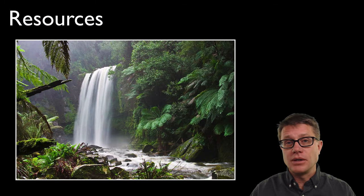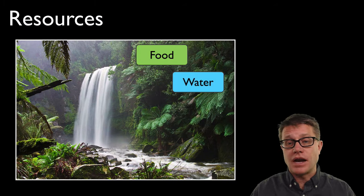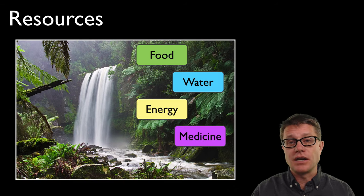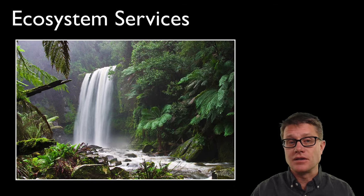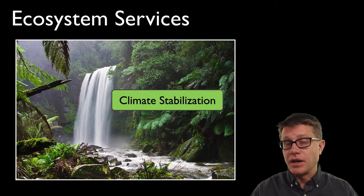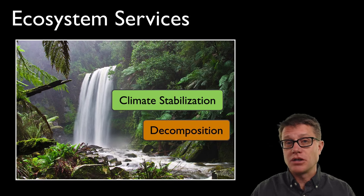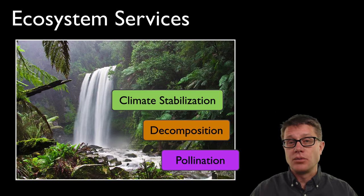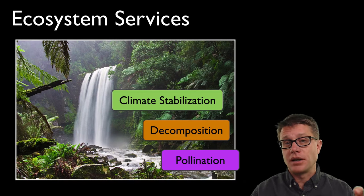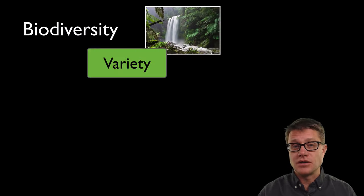So again, why do we need biodiversity? It is where we get our food. It is how we filter our water, energy, medicine. We all get that from our environment. And our environment also does these ecosystem services. They keep our climate stable, they decompose material once it has died, they pollinate our crops. We need biodiversity on our planet for resources and to do these services.